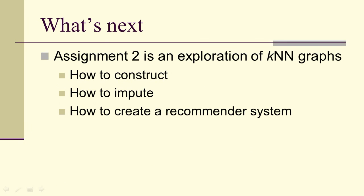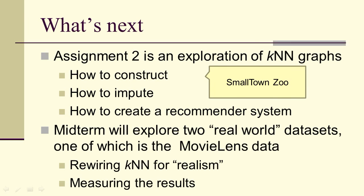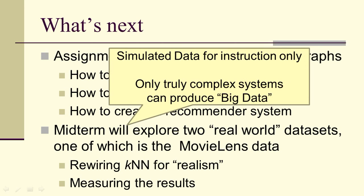So what's next? We're going to be looking at assignment two next, starting next week. It's an exploration of k-nearest neighbor graphs—constructing, imputation, creating a recommender system. We're going to do it in terms of the small town zoo. However, the midterm is going to explore two real world data sets, one of which will be the MovieLens data. We'll be rewiring the k-nearest neighbors at that point and measuring the results. In particular, we're going to be exploring this idea of improving on the k-nearest neighbor graph representation.